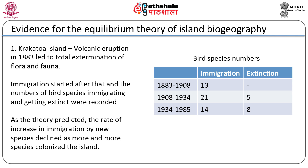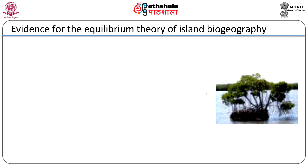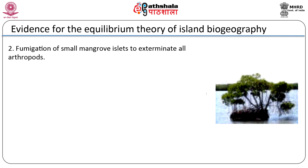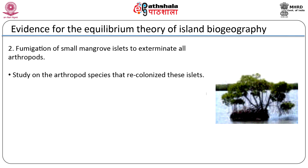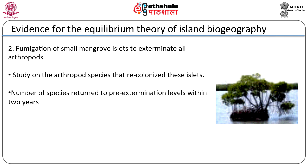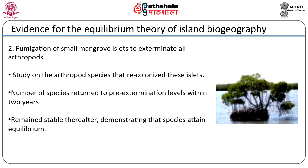The authors also tested the theory against experimental data. Wilson and Simberloff in 1969 artificially created miniature Krakatoas by fumigating small mangrove islets to exterminate all the arthropods. Wilson and his colleagues then routinely surveyed the arthropod species that recolonized these islets. They found that the number of species on these miniature Krakatoas returned to pre-extermination levels within 2 years, where they remained stable thereafter, demonstrating that species equilibria do exist. The predicted distance effect was also confirmed: the farther an islet was from the mainland, the fewer species it held.